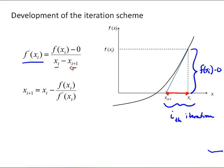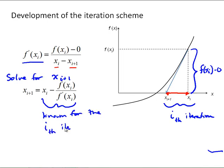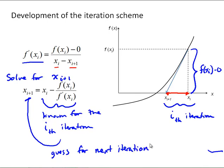So what we'll then do is just solve this equation for xi plus 1, and everything on the right-hand side is known for the i-th iteration. We can use that to get our guess for the next iteration. Just like bisection, we'll keep doing this over and over again until the scheme converges. We know it converges when the absolute value of the approximate relative error is less than or equal to the stopping criterion.